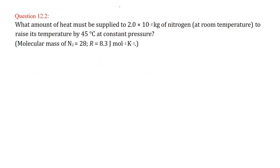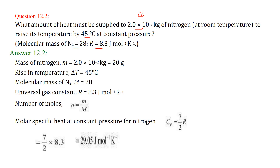What amount of heat must be supplied to 2 × 10⁻² kg of nitrogen at room temperature to raise its temperature by 45 degree centigrade? The temperature change delta T is 45 degree centigrade. The molecular mass of N₂ is given as 28 and the universal gas constant R is given as 8.3.